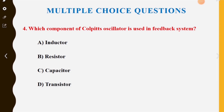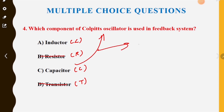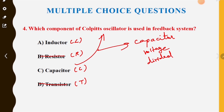Option A is inductor L, Option B is resistor, Option C is capacitor, Option D is transistor. In the Colpitts oscillator, the main role is played by the capacitor voltage divider circuit. We use the capacitor in the feedback system, so Option C is the correct answer.